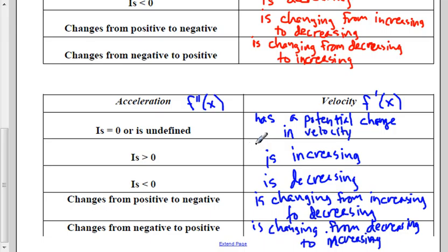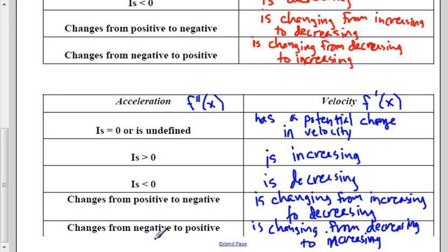Velocity is a vector, meaning it has magnitude and direction, whereas speed just has magnitude. Now, just like we did a couple lessons ago, we can look at those relationships: if velocity is the derivative and position is the original function, then if the derivative has a zero or is undefined, there's a potential turnaround point. If velocity stops, the position could turn around. If the velocity is positive, then the position is increasing — we say position is increasing when going to the right on a number line.